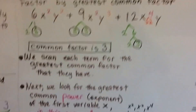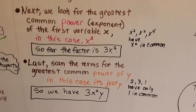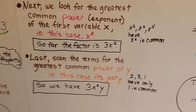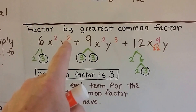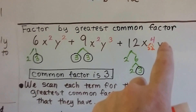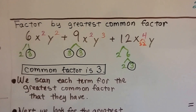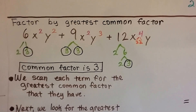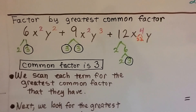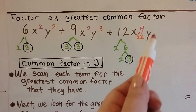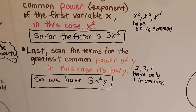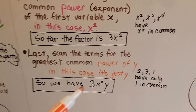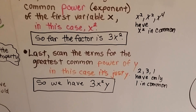The last thing we do, because we notice there's a y here, is we scan the terms for the greatest common power of y. In this case, it's just going to be a y. Because we've got a 2, a 3, and this is y to the first. And 2, 3, and 1 — the only thing they have in common is 1, and we don't have to write the 1, so we're just going to use a y. Now we add it to what we had, and we end up with 3x squared y as the common factor for this big polynomial.